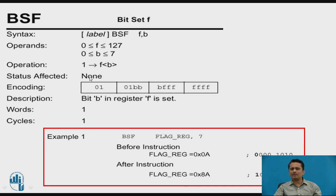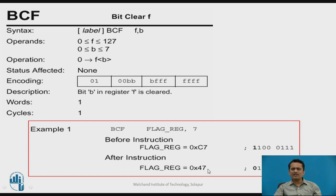In the BSF example: BSF FLAG, 7 — we want to set bit number 7 of the flag register. Before execution, assume the contents of the flag register are 0x0A, where bit 7 is cleared. After execution, bit 7 gets set, so the contents change from 0x0A to 0x8A. Only that one bit changes.